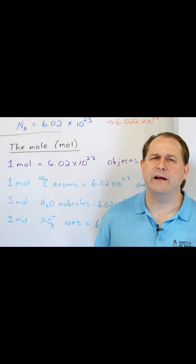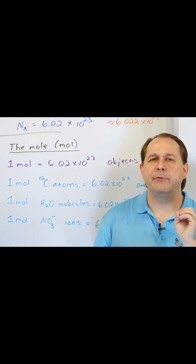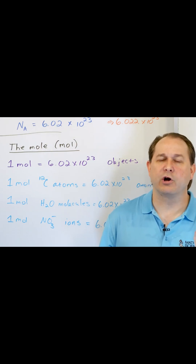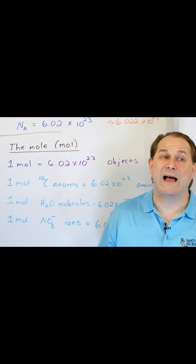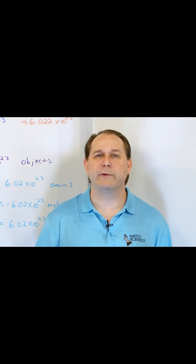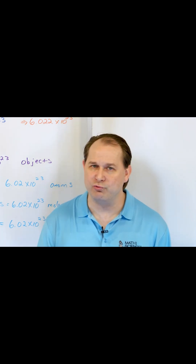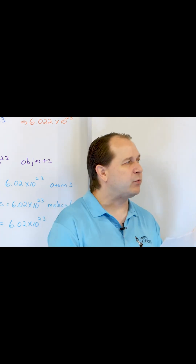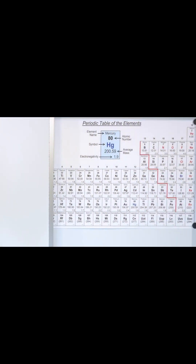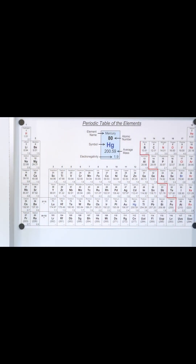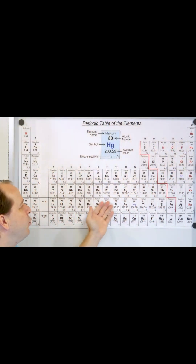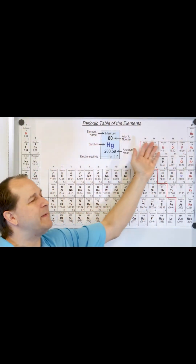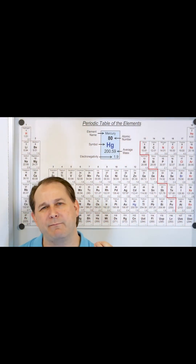Now I want to take a second to talk about where this fundamental number called the mole actually comes from, and the reason why it's 6.02 times 10 to the 23rd objects. The reason is because we have to have a standard — every measurement system has to have a standard. On this periodic table, we need to pick some element that's going to serve as our standard mass.